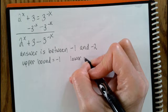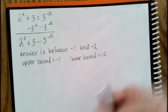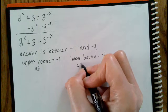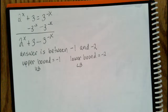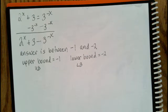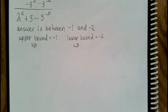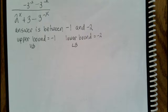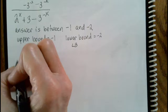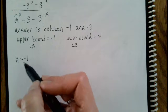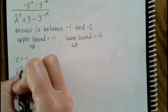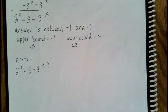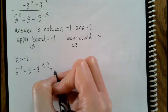Negative 2 is the lower bound because it's farther to the left on the number line. I'll abbreviate upper bound as UB and lower bound as LB — there's a lot of writing on this problem. What Edmentum has said to do is figure out what happens when x equals negative 1. We put negative 1 back into the equation: 2 to the negative 1, plus 3, minus 3 to the negative negative 1. When we type that in, we get 0.5.